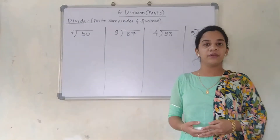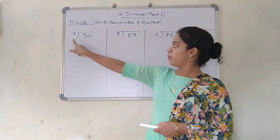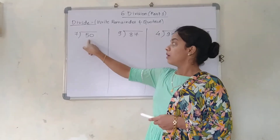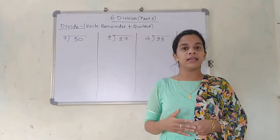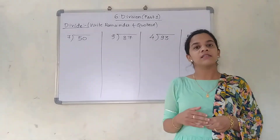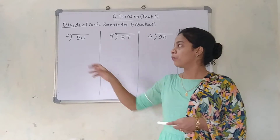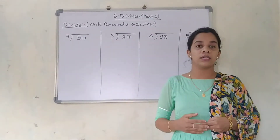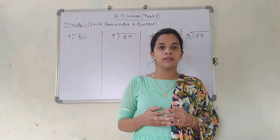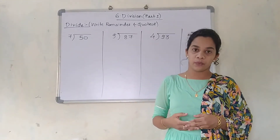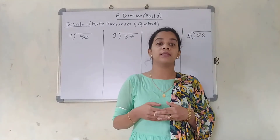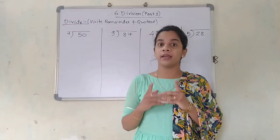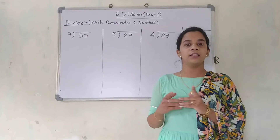Now they have told us to divide and also write the remainder and quotient. The first example is 50 divided by 7. I have written 7 here and 50 here. 7 tens are 70. 50 is less than 70, so this is going to come somewhere in the table of 7. Start saying the table of 7: 7 ones are 7, 7 twos are 14, 7 threes are 21, 7 fours are 28, 7 fives are 35, 7 sixes are 42, 7 sevens are 49, and 7 eights are 56.